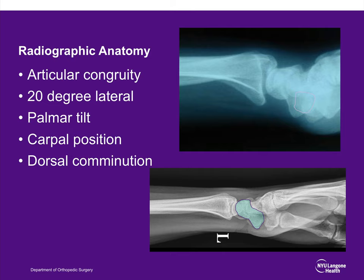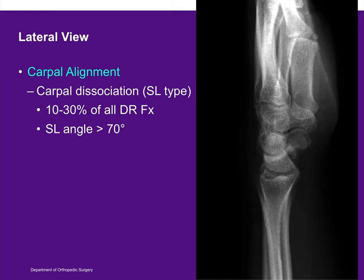On the x-ray, the pisiform is outlined in pink and the scaphoid is outlined in blue. To get a true lateral, the pisiform should be between the tubercle of the scaphoid and the capitate—the SPC relationship. On a lateral view, one can also look at the relationship of the lunate and scaphoid; an increase in the scapholunate angle greater than 70 degrees is considered abnormal.